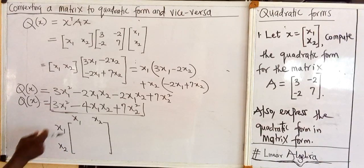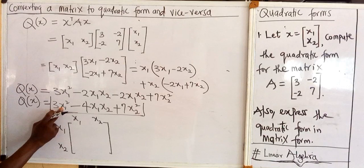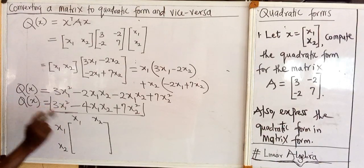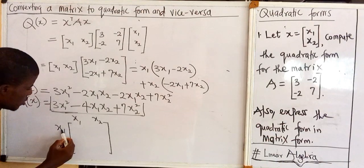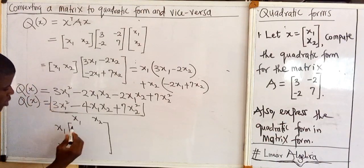Now the coefficient of x1 squared here is 3, and x1 times x1 will produce x1 squared, so I will write down this coefficient here.